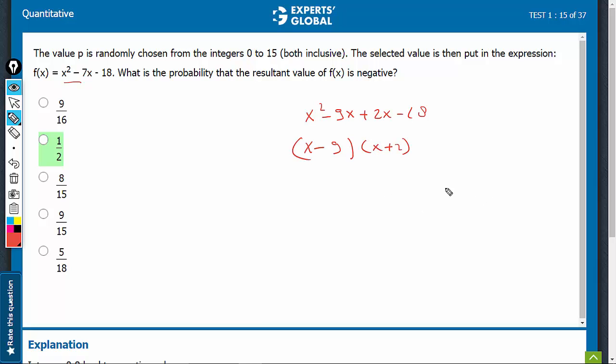If you have seen the inequations video, you would be aware of this concept. One node is positive 9, the other node is negative 2. The value of the expression is going to be positive on the rightmost side and then, alternately, negative and positive.